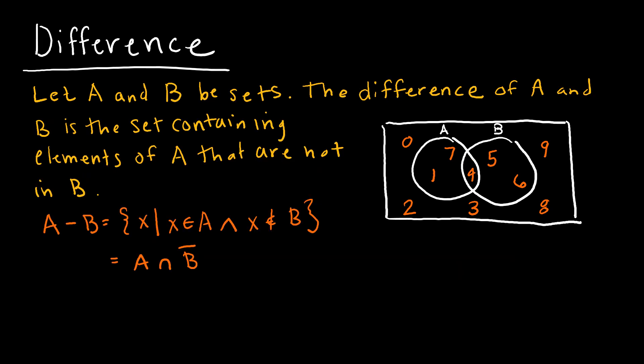And we're going to now look at the difference. The difference is essentially the set containing all of the elements of set A that are not in set B. So here I'm looking at A minus B being the set of all X's such that X is in A, but X is not in B.